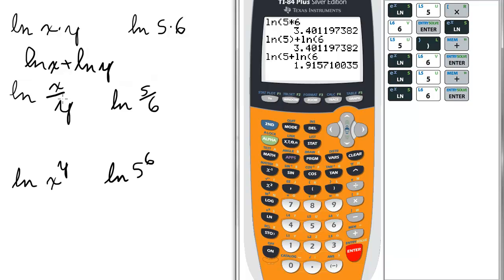next law of natural logs, ln of x over y. For this, we will enter ln of 5 divided by 6, and we get this number, negative 0.18.